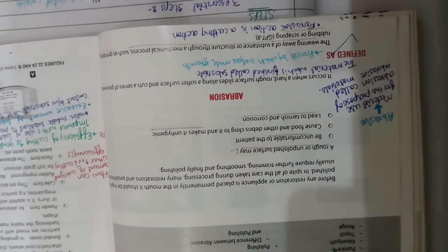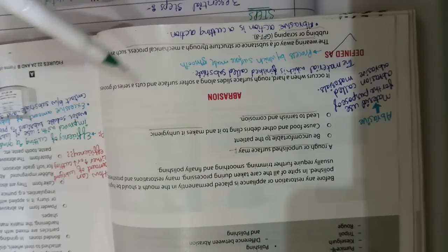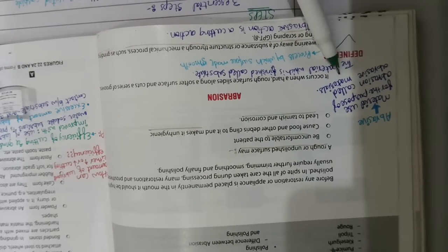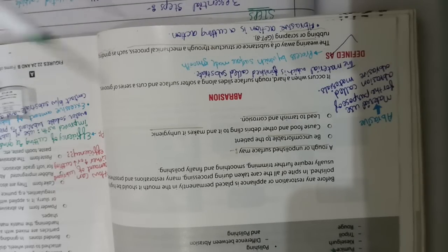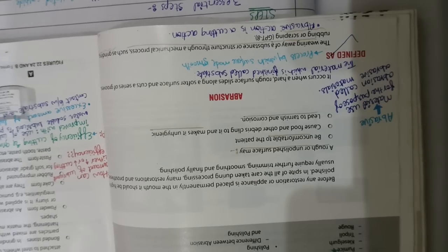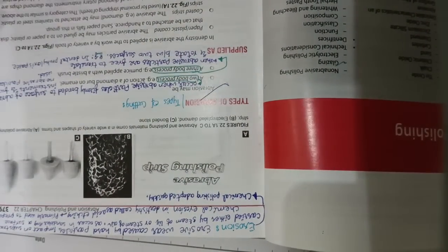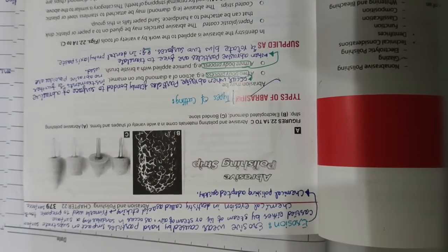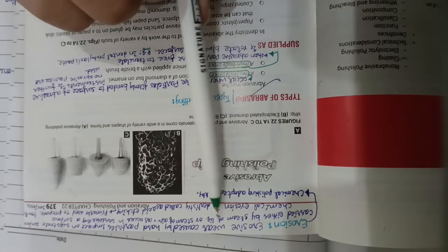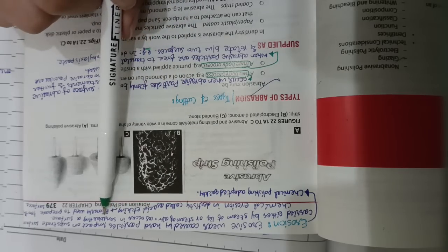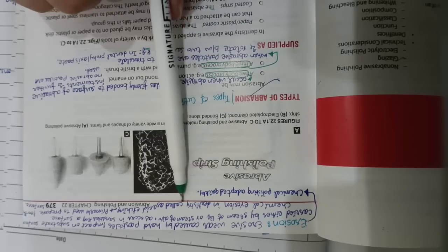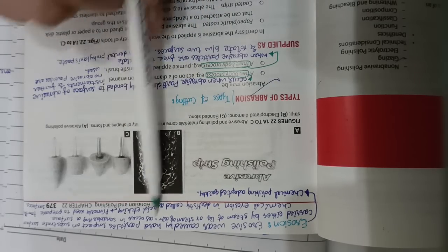First of all, we need to know the definition from the past paper. Materials used for the purpose of abrasion are called abrasive materials. The abrasion definition involves making a surface smooth. Abrasion action and cutting action — this is important. Erosive wear caused by hard particles impacting on a substrate, carried either by a stream of liquid or air as in sandblasting — this is surface chemical erosion.